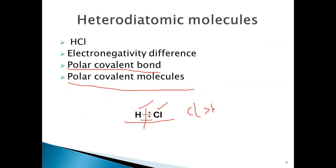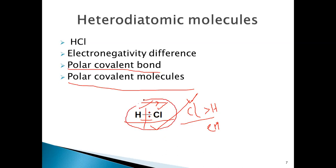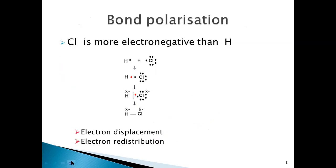Why does this unequal sharing happen between these two atoms? This is because of the difference in electronegativity. Chlorine, which is a halogen, is more electronegative than hydrogen. Due to this difference in electronegativities, chlorine draws the electrons towards itself. Because of this, polarity is developed between the two atoms and bond polarization takes place.